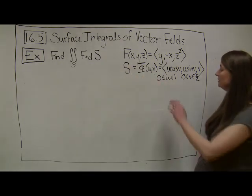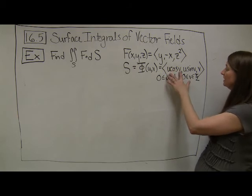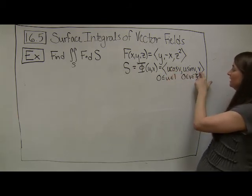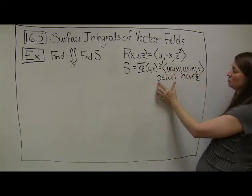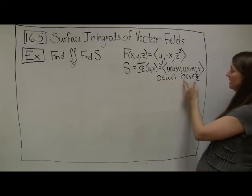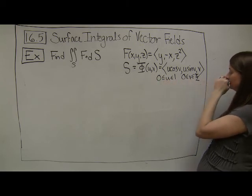Our surface is already parameterized for us, and the parameterization is given by <u cos v, u sin v, v>. Our bounds are u going from 0 to 1, and v going from 0 to π/2.